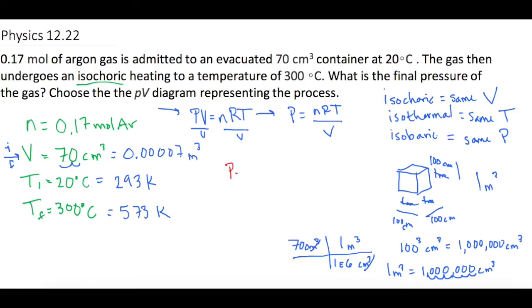So pressure is going to be equal to 0.17 moles of argon times the gas constant, which in this case is 8.314. And then temperature, the final temperature is 573 Kelvin. And that is all over our volume, which initial and final is the same, so 0.00007 meters cubed. Okay, so when we plug that in, we get...